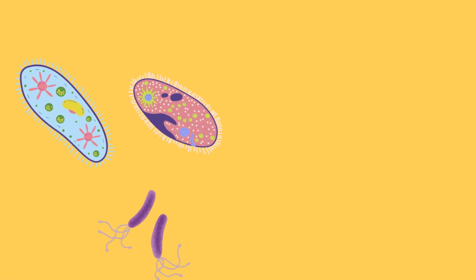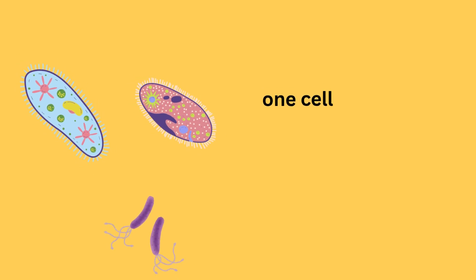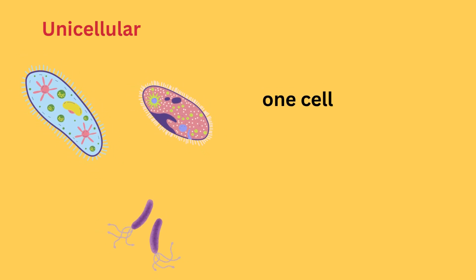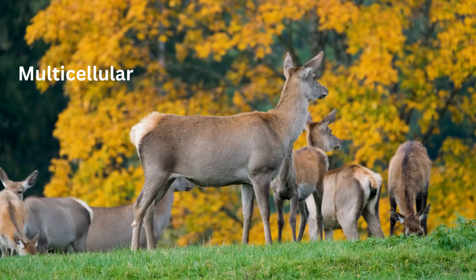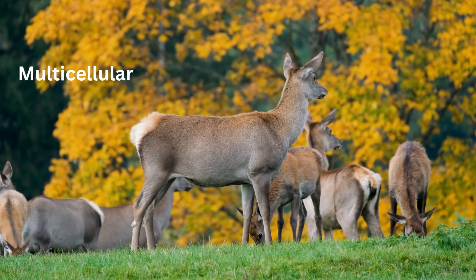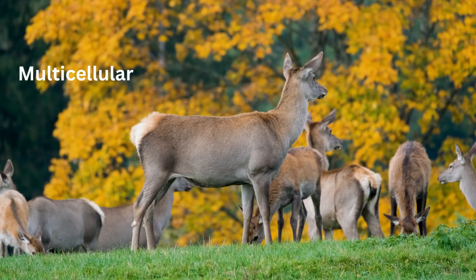Some organisms are made up of just one cell. We call them unicellular, like bacteria. Others like us are multicellular, made up of trillions of cells working together.